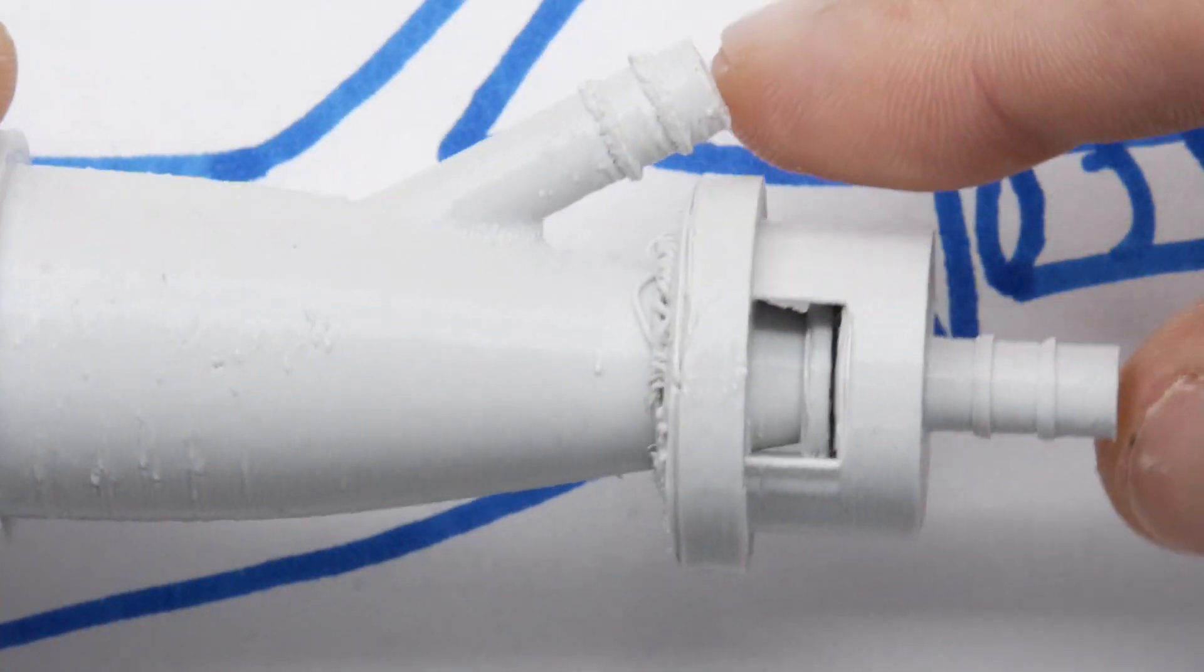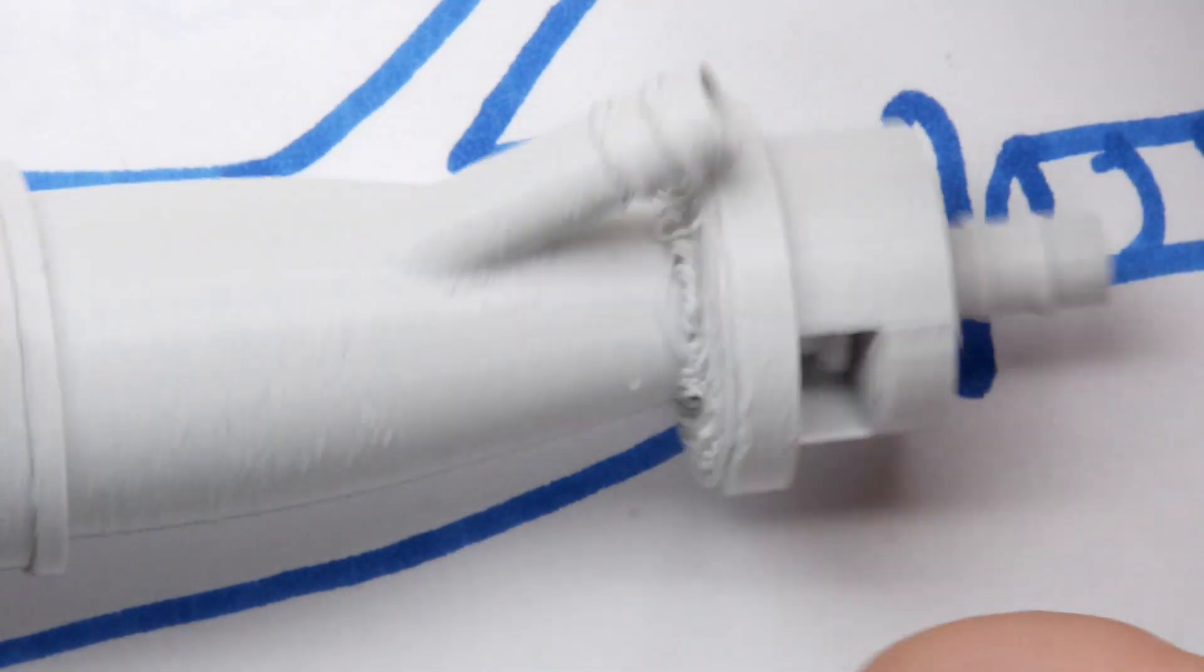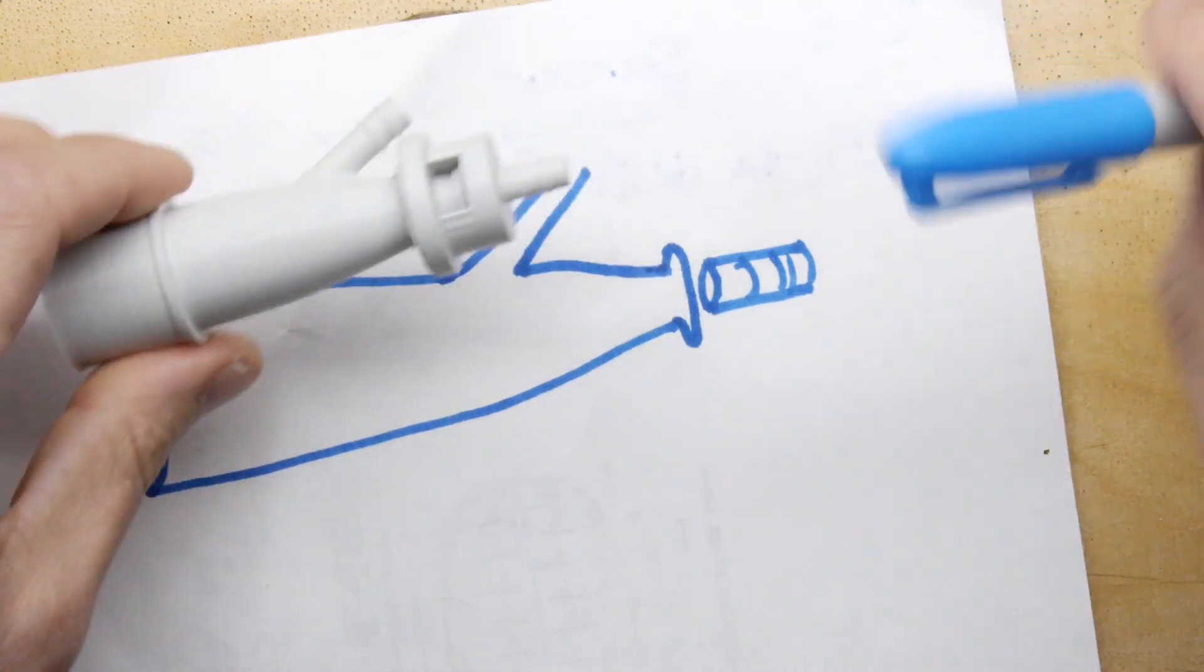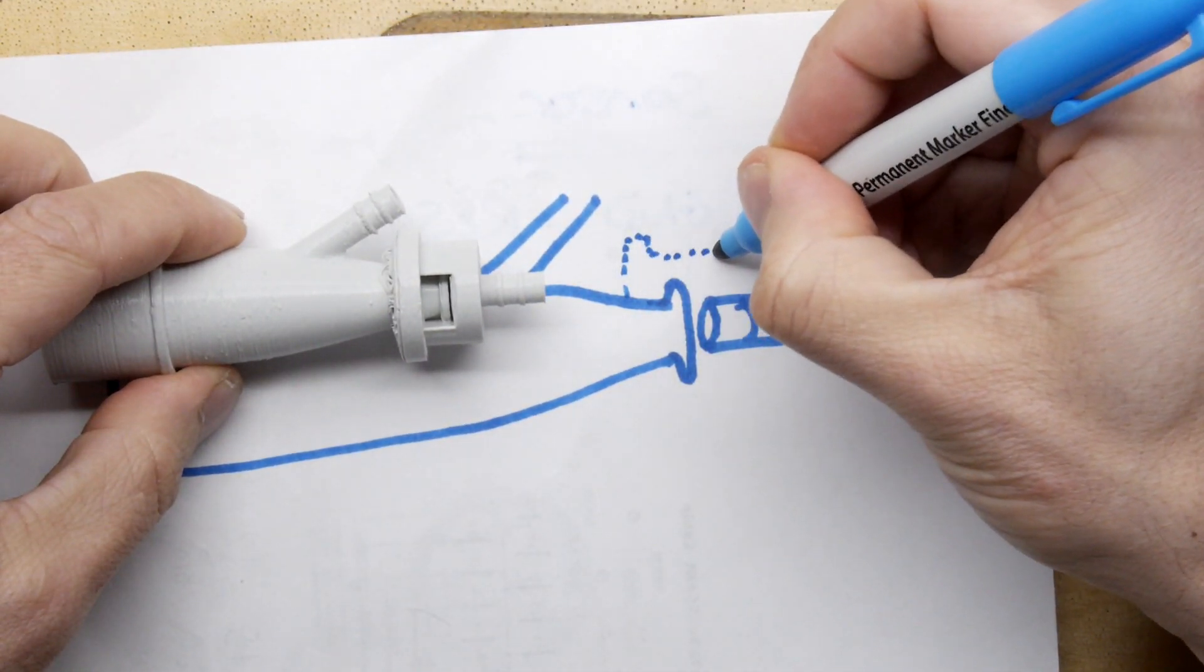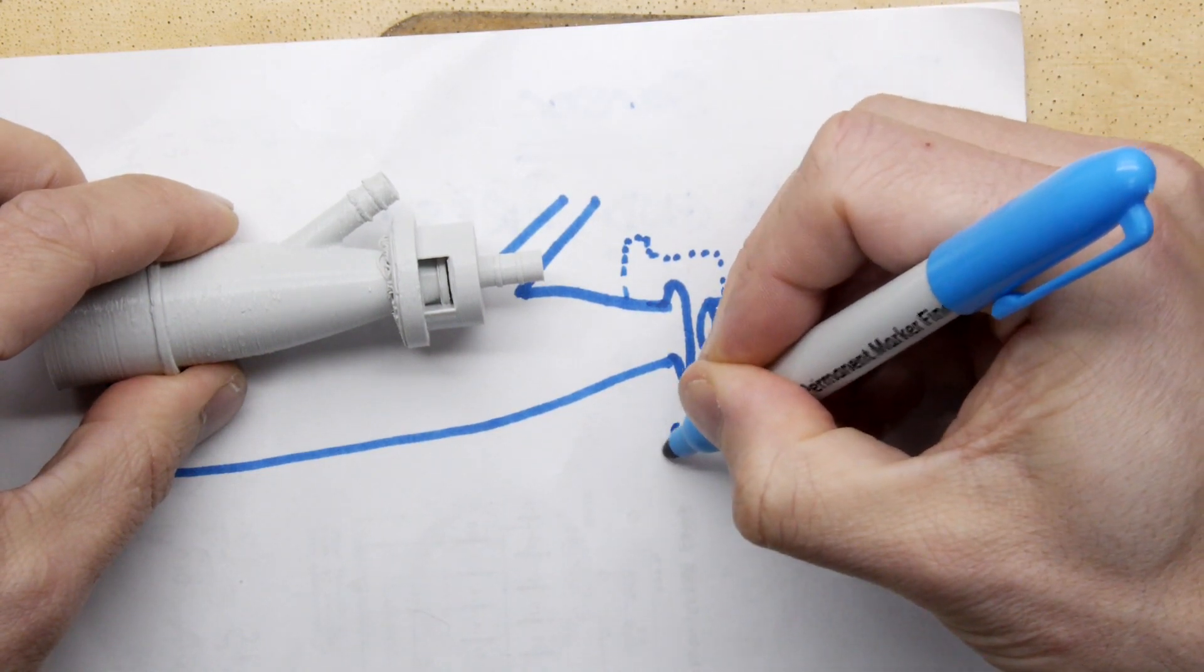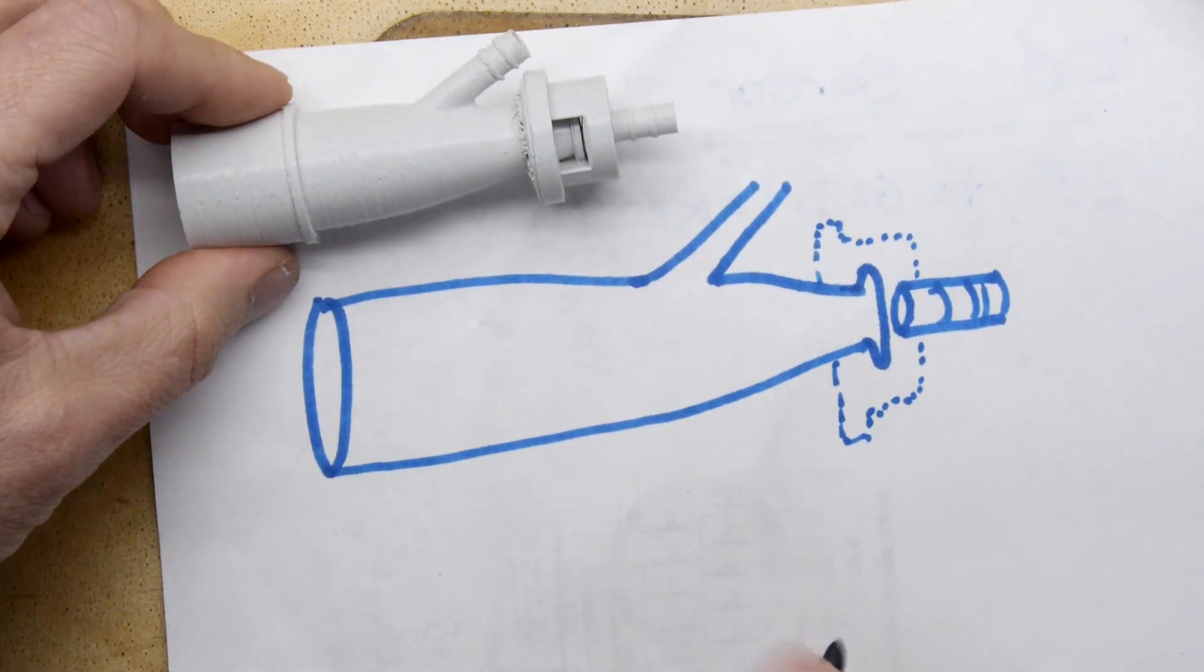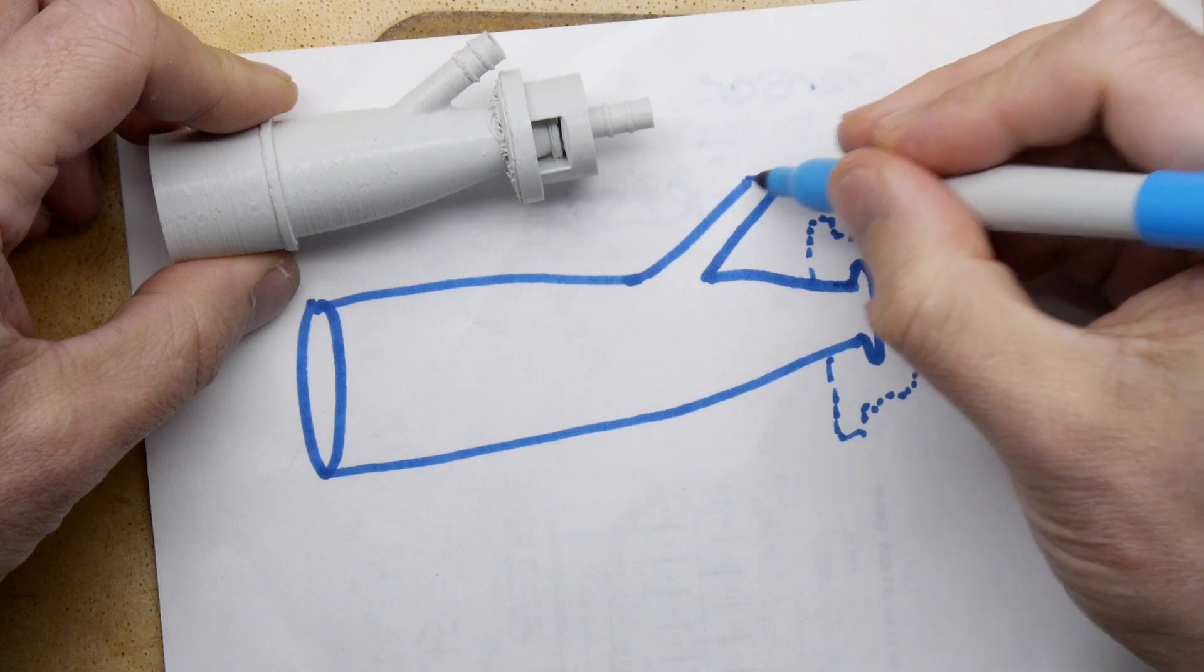Even if you blocked all of these ports and blew into it, you'd still have gas coming out these sides, so it can breathe from there. All I can assume is this is on its way to or from something.